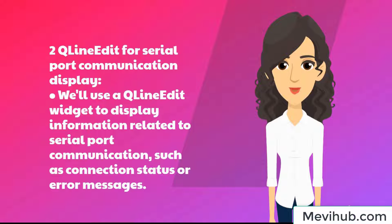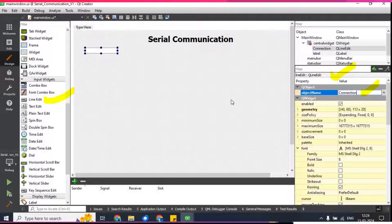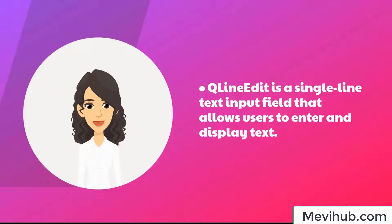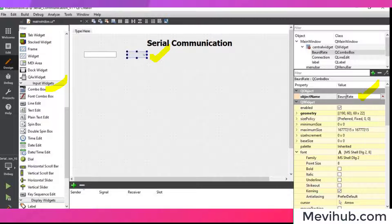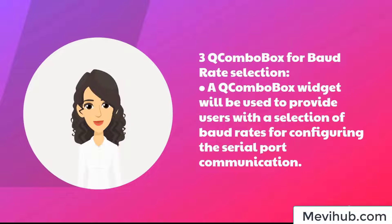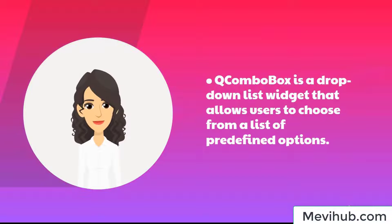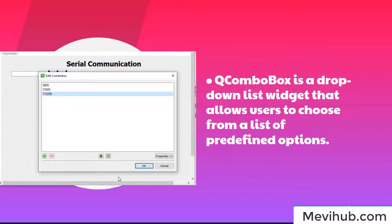Step 2: QLineEdit for Serial Port Communication Display. We'll use a QLineEdit widget to display information related to serial port communication, such as connection status or error messages. QLineEdit is a single-line text input field that allows users to enter and display text. Step 3: QComboBox for Baud Rate Selection. A QComboBox widget will be used to provide users with a selection of baud rates for configuring the serial port communication. QComboBox is a drop-down list widget that allows users to choose from a list of predefined options.